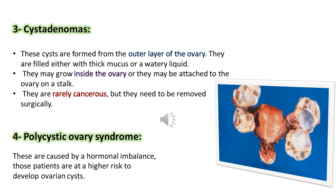Cystadenomas are cysts formed from the outer layer of the ovary. They are filled with either thick mucus or a watery liquid, and may grow inside the ovary or be attached to the ovary on a stalk. They are rarely cancerous but need to be removed surgically. Polycystic ovary syndrome is caused by hormonal imbalance, and those patients are at higher risk of developing ovarian cysts.